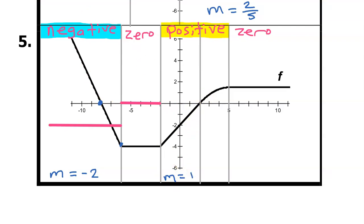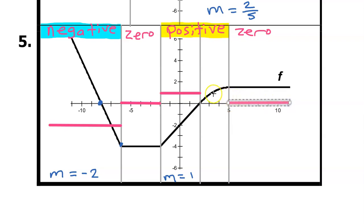After the linear part, f prime will be positive but won't have a constant slope. It helps to draw the final zero interval first — we know f prime needs to end up at 0 once we get there, and there are no sharp corners, so it should be a smooth transition from the increasing interval to the flat interval. So this is a possible graph of f prime.